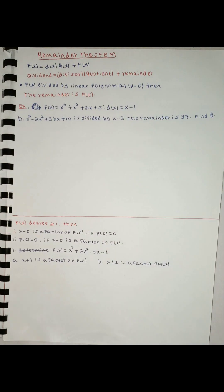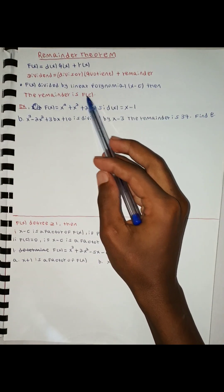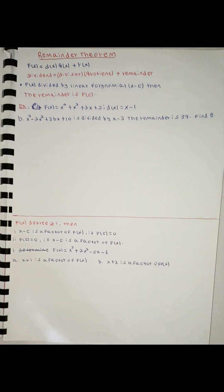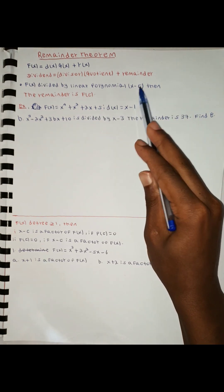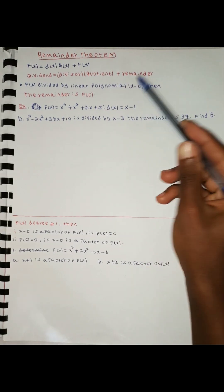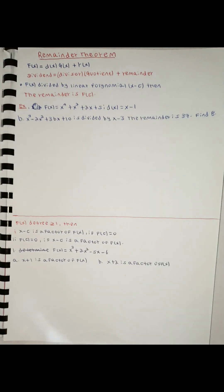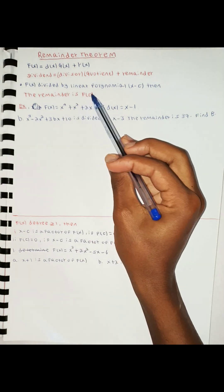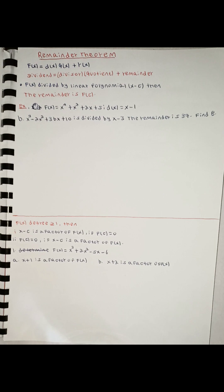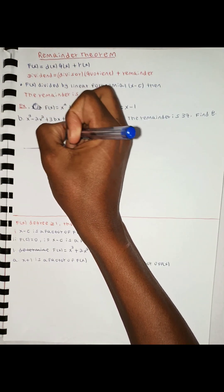f of x is equal to f of x. If you're going to divide by a linear polynomial x minus c, then c is equal to a constant. If you're going to have a constant, I'm going to show you the remainder theorem. You can see x minus c as a linear polynomial, and the remainder theorem gives us f of x.